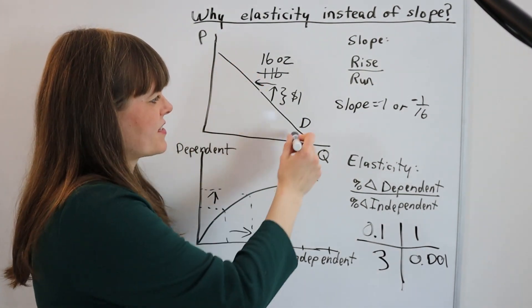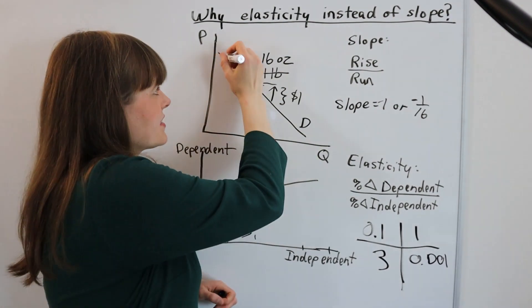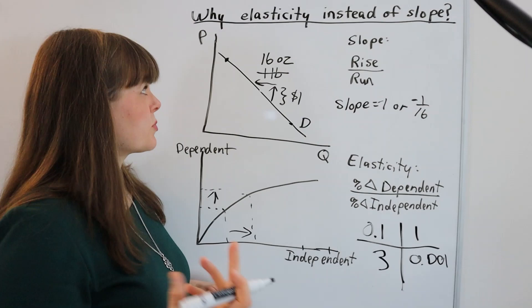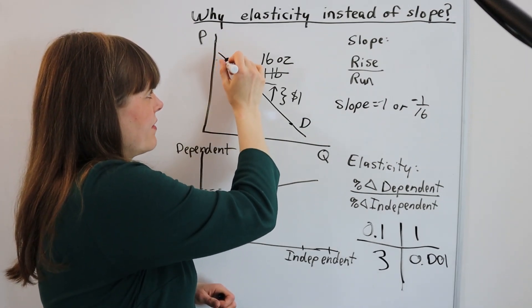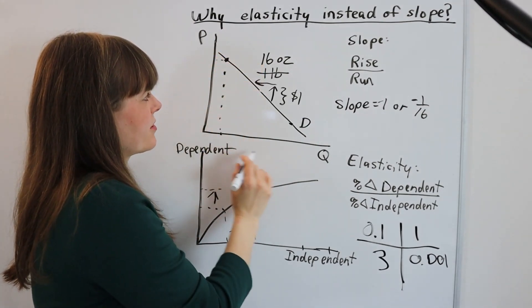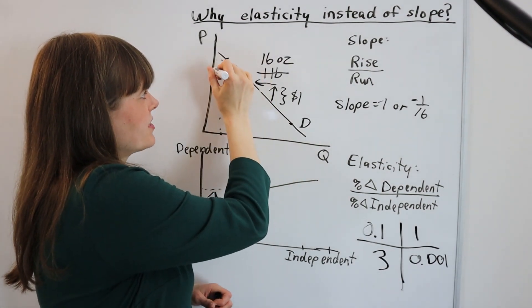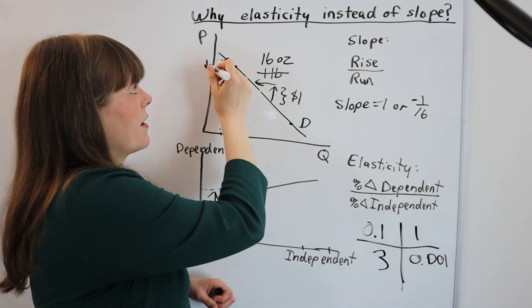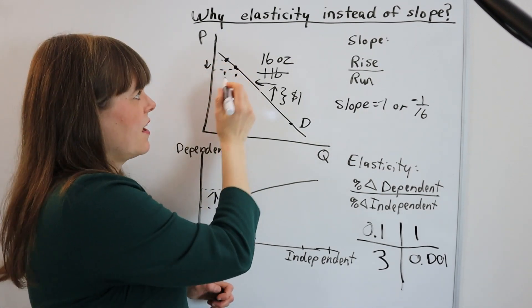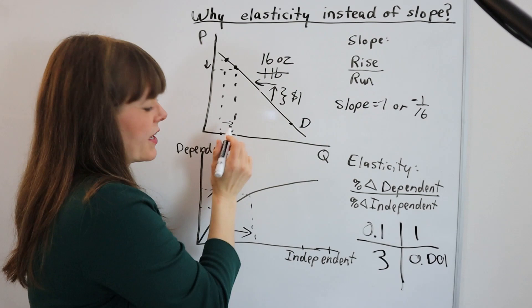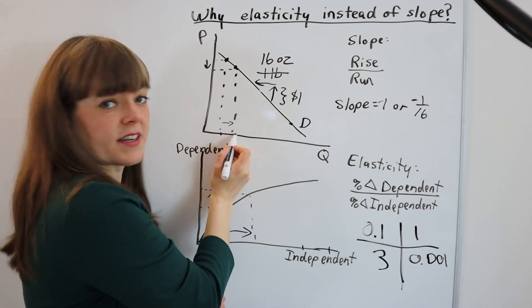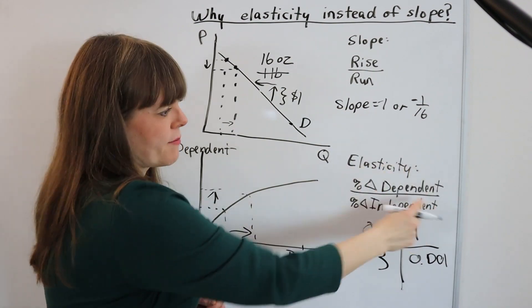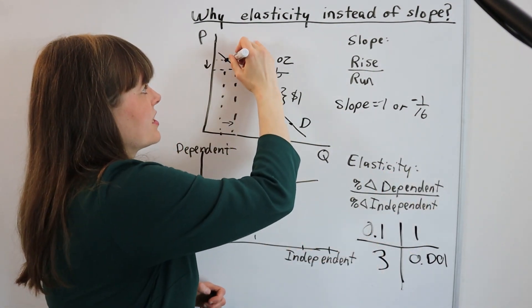Now, one interesting thing about elasticity on a demand graph is that the elasticity on a linear line up here versus down here is actually really different. So we have here, our dependent variable is our quantity. Going from here to here, we have a small increase in the percent change in price and a huge increase, like basically a 100% increase in the quantity purchased. So that's going to be a large number divided by a small number. That's a large elasticity.